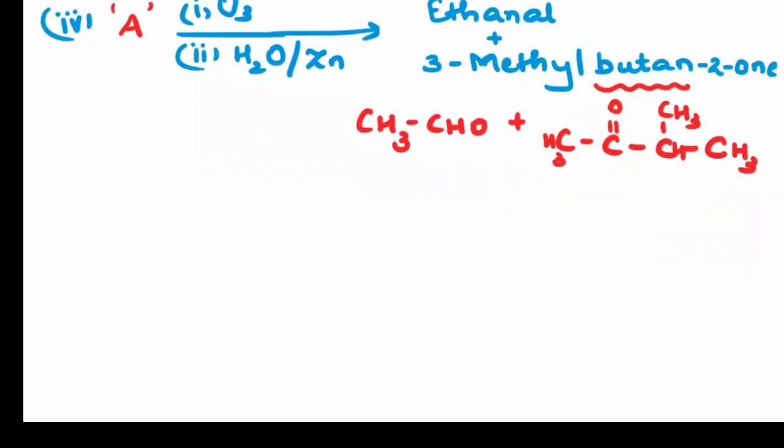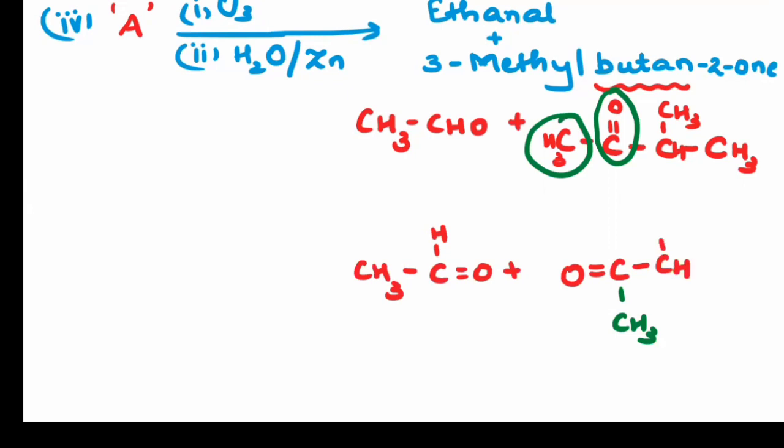So quickly we will rearrange. This will be CH3 double bond O hydrogen plus. Now remember you are going to take this C double bond O linearly. So it will be C double bond O, and then this CH3 I will write it down on top or below. This is the CH3 and then rest all will remain as it is. This is CH, CH3, CH3.